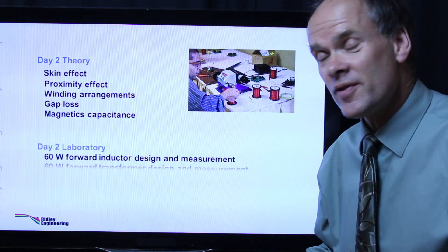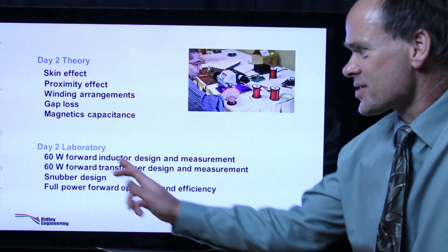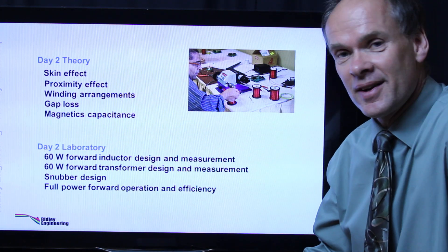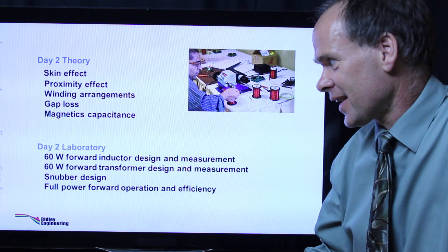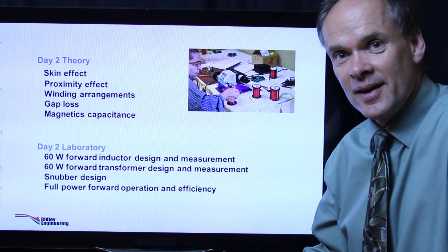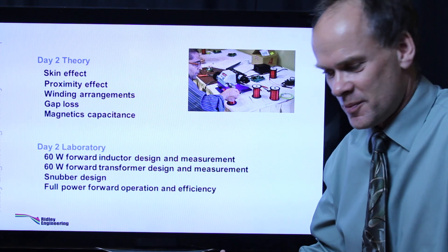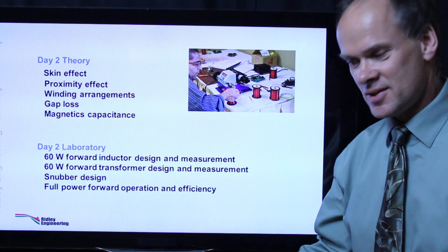In the afternoon you'll move on to a different circuit and now you'll build both an inductor and a transformer for a 60 watt forward converter. Then you'll add snubbers to the circuit and at the end of the second day you'll have a full power forward converter operating and you'll measure the efficiency of that converter. Again we'll have a little competition between the benches to see who does the best job.